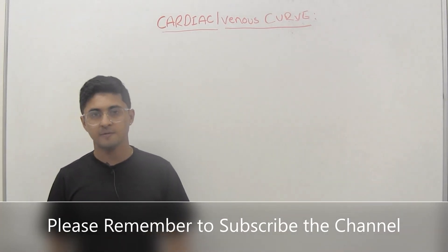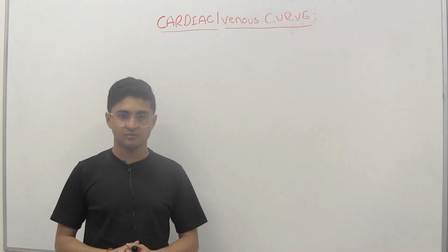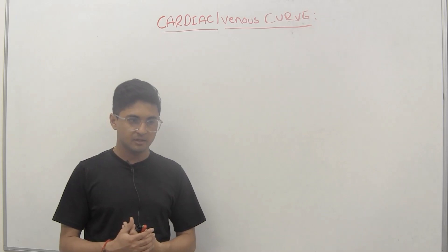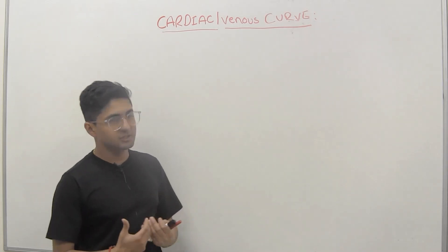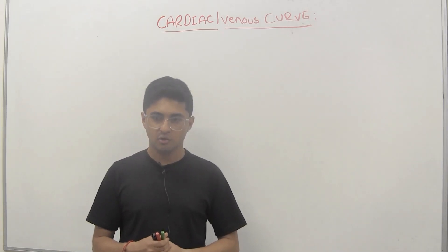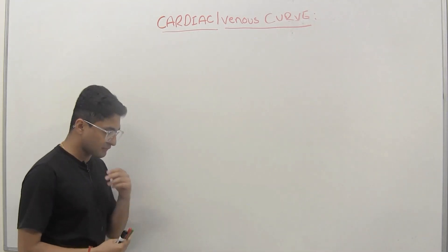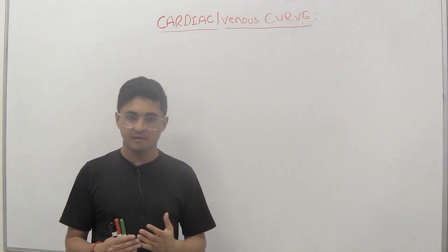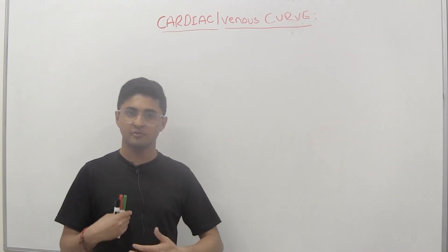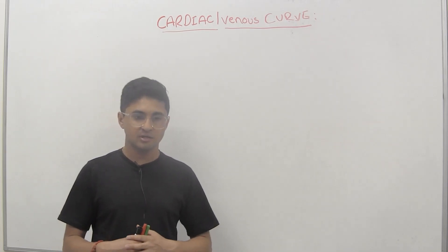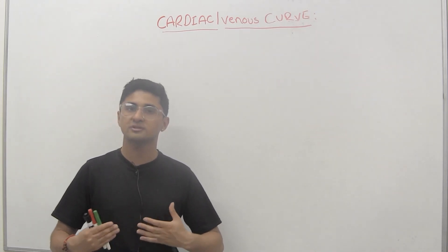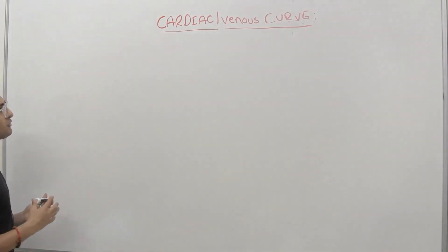Today we're going to talk about the cardiac and venous curve, one of the most important lectures. We're going to define cardiac output and the venous curve. We've discussed a lot about this in previous lectures on cardiac output, but today we're going to focus on the different graphs and look at how the graph can alter based on additions of blood volume, positive inotropic drugs, or negative inotropic drugs, and the changes you see in venous return and cardiac output.